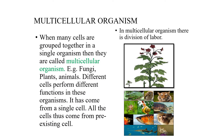Multicellular organism. Many cells are present in an organism, with division of labor among themselves. Each cell performs a particular function. When many cells are grouped together in a single organism, they are called a multicellular organism. Examples include fungi, plants, and animals.